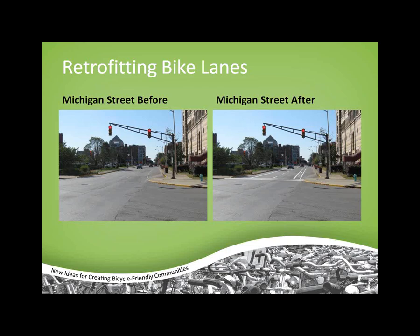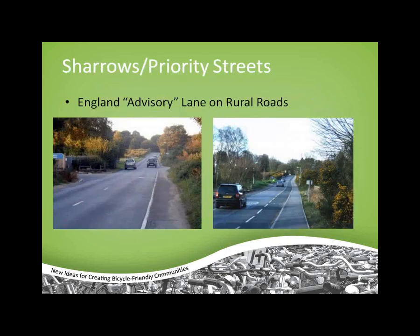An interesting example from England shows an advisory lane on a rural road between two villages with heavy bike traffic. They used dashed bike lanes with a single wide travel lane — if no cyclists are in the lane, two cars can pass, but if cyclists are present, drivers must slow down and yield. This would be difficult to implement in the U.S. currently, but it's a creative example of how to accommodate both cyclists and cars on an important roadway.